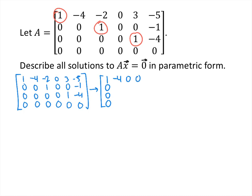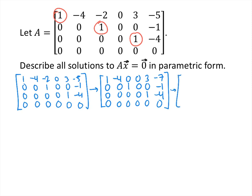That's going to give us a 0 here, and 2 times negative 1 plus negative 5 is negative 7. Then row 2 stays the same, and the rest of the rows all stay the same. The last row operation is we replace row 1 by adding negative 3 times row 3. That's going to give us a 0 here. Negative 3 times negative 4 is positive 12, plus negative 7 is positive 5, and now our matrix is in reduced echelon form.